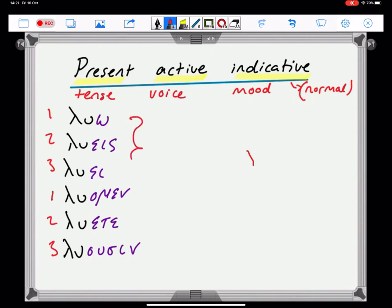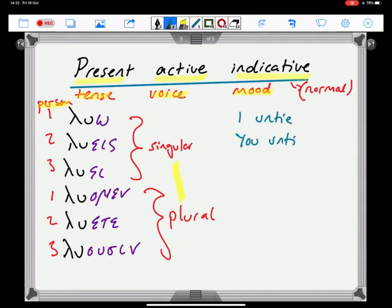And a number. Singular. And plural. So, grammatically, we talk about verbs having tense, voice, mood, person and number. Start getting used to all these different categories and we will fill in all the possibilities there as we continue to move through the course. I should add in a translation for these just to make sure everyone is happy. I untie. You untie. He unties. We untie. You untie. They untie.